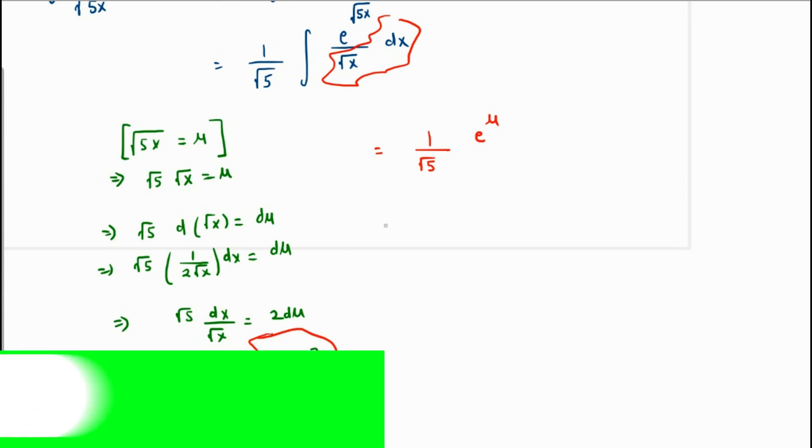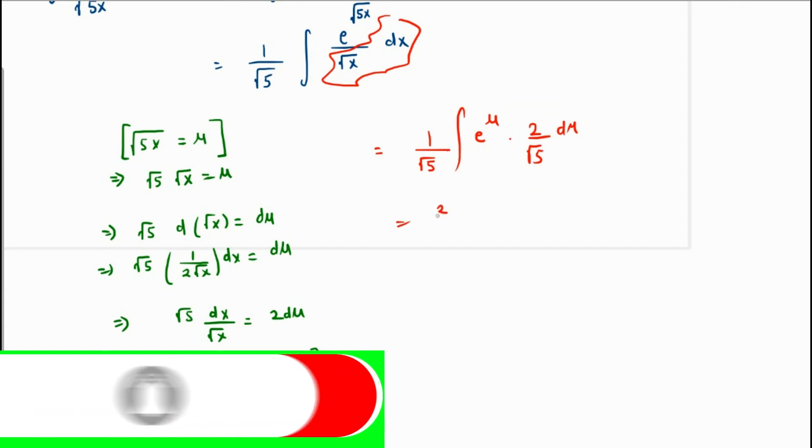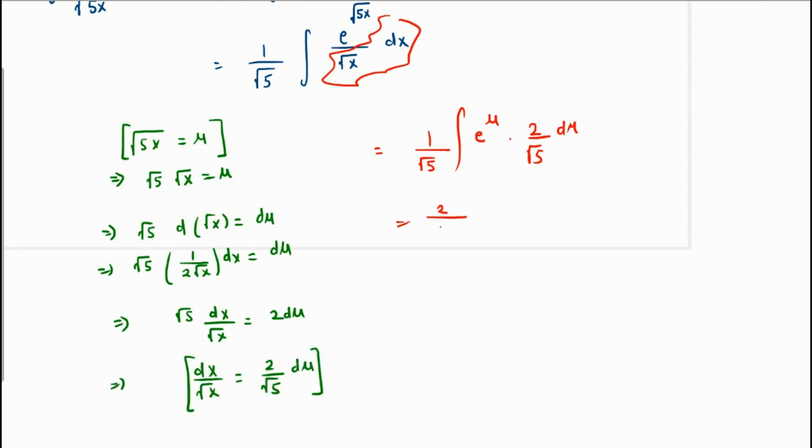And dx over root x is 2 over root 5 times du, so we replace that. We take out the constant, so 2 comes out and root 5 times root 5 is 5.